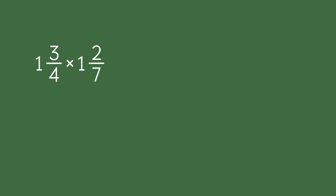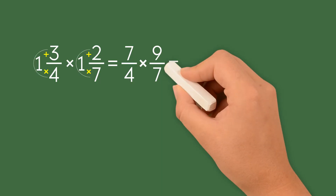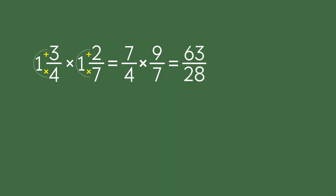Let's do another example: 1 and 3 fourths times 1 and 2 sevenths. Let's convert the first mixed number into an improper fraction. The numerator is 1 times 4 plus 3, which is 7. The denominator stays the same: 4. Now let's convert the second mixed number. The numerator is 1 times 7 plus 2, which is 9. The denominator stays the same: 7. Now we multiply the improper fractions and get 63 over 28.